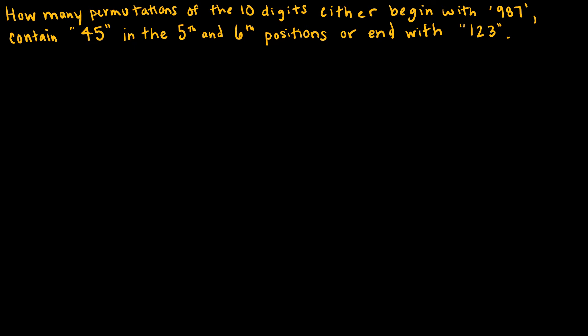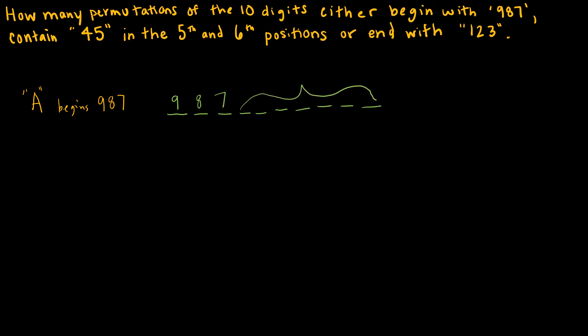How many permutations of the 10 digits either begin with 9, 8, 7? We'll let A be the set of permutations that begin with 9, 8, 7. Since 9, 8, 7 fill the first three positions among 10 digits, I have 7 remaining positions to permutate, giving 7 factorial.